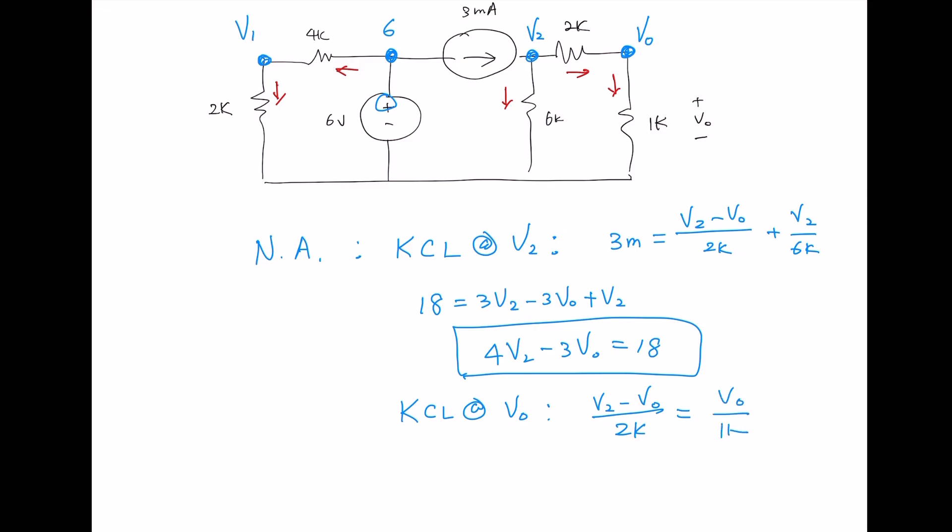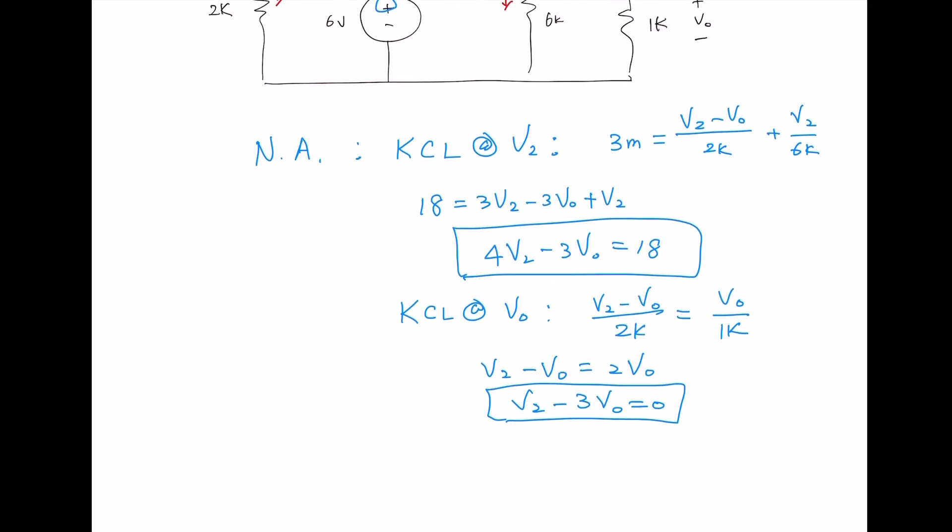So we multiply 2K for both sides. V2 minus V0, V2 minus 3V0 equals 0. So these two equations, you should be able to find V0 and V2.